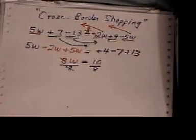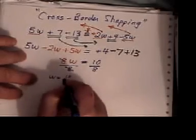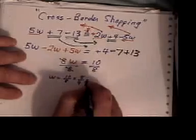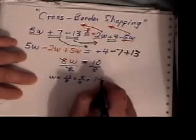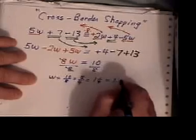These guys cancel. And you're left with W equals 10 over 8, or 5 over 4, which is 1.25.